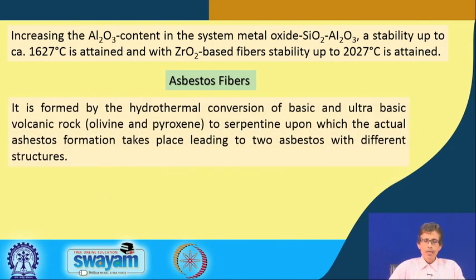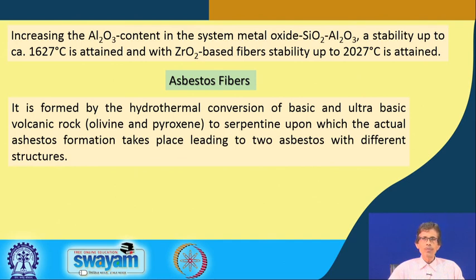We can have a very useful inorganic fiber in asbestos fibers. These are formed by a natural reaction known as hydrothermal reaction or hydrothermal conversion, where water is available at very high temperature below the earth's surface. Of basic and ultra-basic volcanic rock - we know that the melt from the core of the earth comes out in some orifices as the corresponding volcanic eruption - what is coming out as that particular volcanic rock is your olivine and pyroxene, which can be converted to serpentine, upon which the actual asbestos formation takes place, leading to two asbestos forms with different structures.